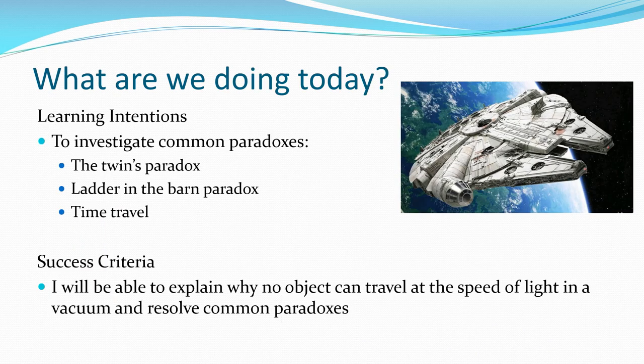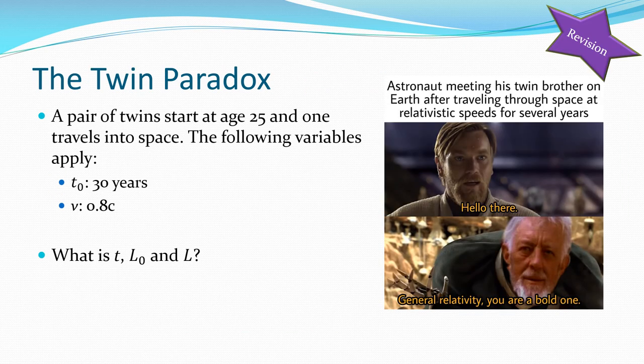Today we're going to look at some famous paradoxes: the twins paradox and the ladder-in-the-barn paradox, and how those relate to time travel. We will explain why objects do not travel faster than the speed of light and resolve these paradoxes so you can understand why they are actually possible.